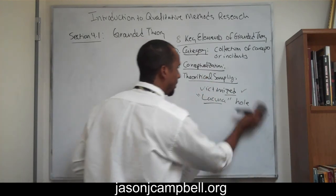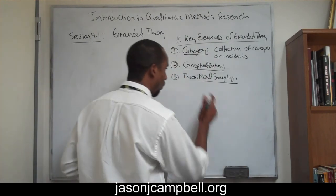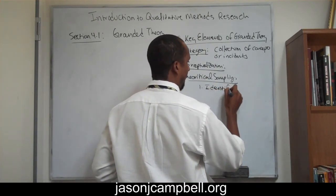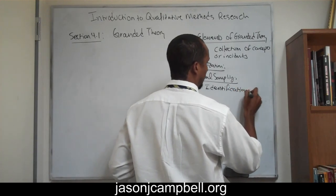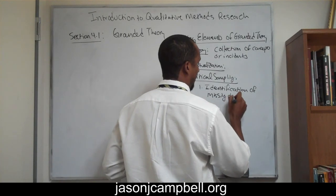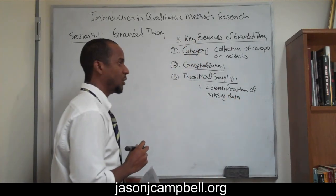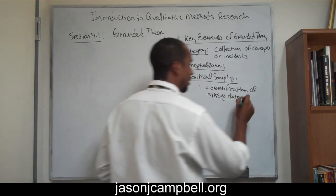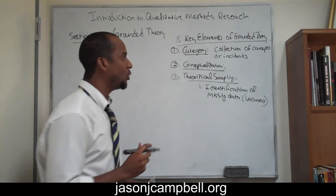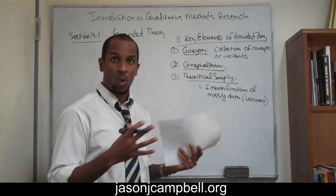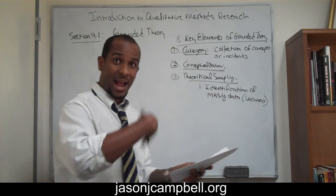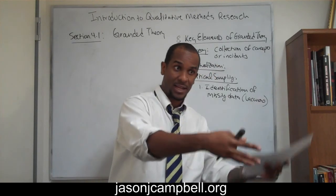Theoretical sampling unfolds in three stages. First, I identify lacunas within the research — holes in the research. You do this after you've collected your data and you're back in the office. You identify that the data is telling you, suggesting that there's a hole, something unaccounted for.